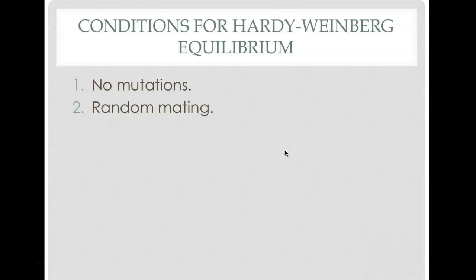The second condition is random mating, meaning there is an equal probability that any individual will mate with any other individual. This is almost never true because there is always a mate preference. For example, a female bird will preferentially mate with the most brightly colored male rather than any random male around her.